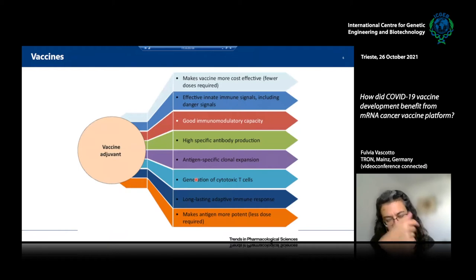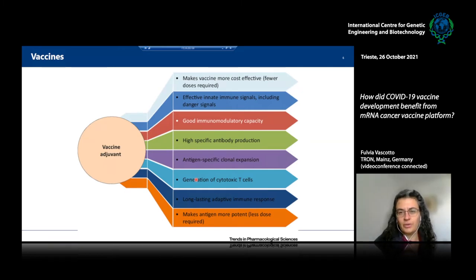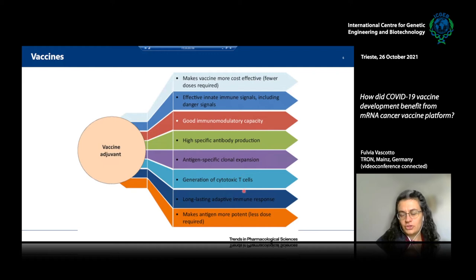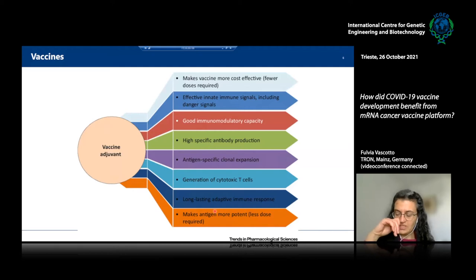In vaccines, the adjuvant effect was the most debatable component, but a vaccine is composed of several entities that need to provide immunological activity. Antigen-specific clonal expansion of B cells and T cells is one additional aspect — not only the production of highly specific, neutralizing antibodies, but also the generation of cytotoxic T cells. The long-lasting adaptive immune response is one of the key characteristics that allows us to be protected for a very long time.